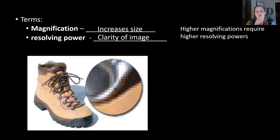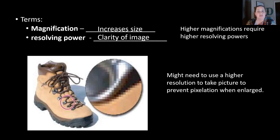The higher the magnification that we have means we need a higher level of resolving power in order to see the details that are present. In this particular case where we zoomed in on a part of a boot, we might need to use a higher resolution to prevent pixelation from occurring. The same thing happens when we talk about microscopes.